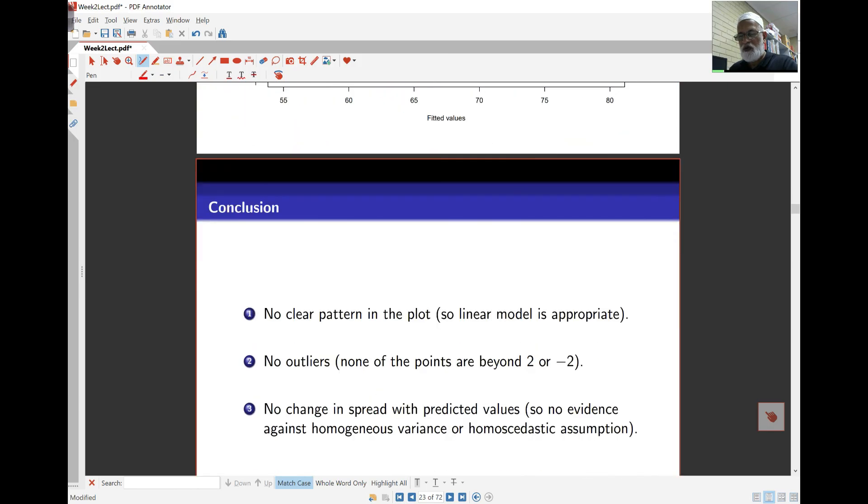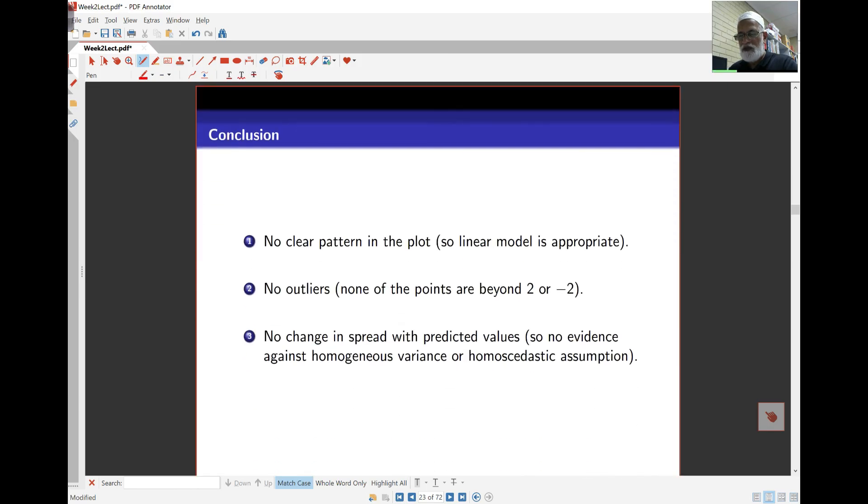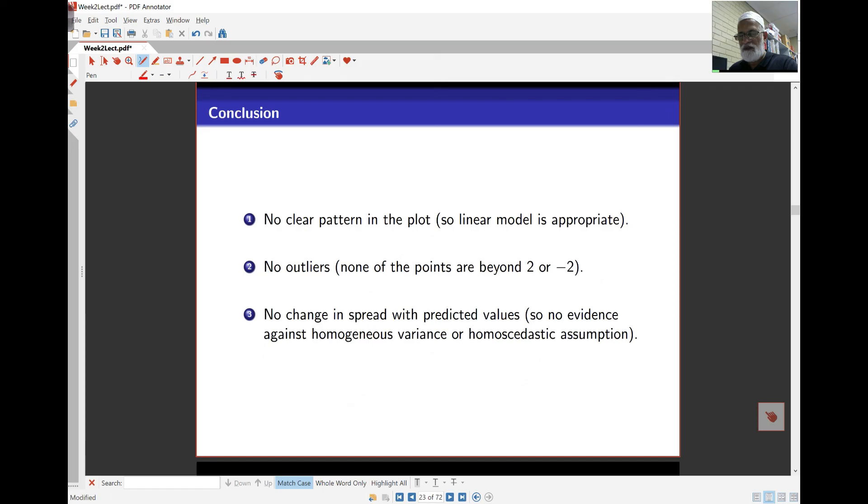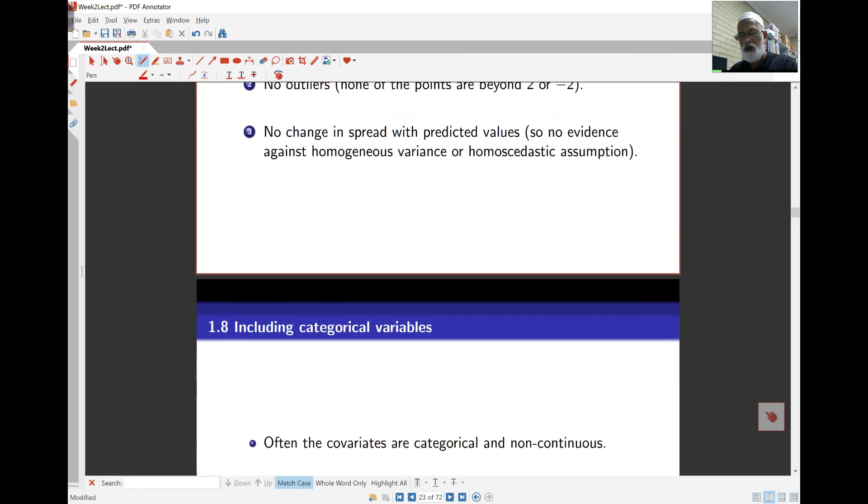So I'd accept this as a good model here. In other words, I wouldn't actually worry about any of the assumptions. So the usual assumptions that we test for are normality, and that the linear model is appropriate, and any problems with non-homogeneous variance or heteroscedasticity, those are all okay here.